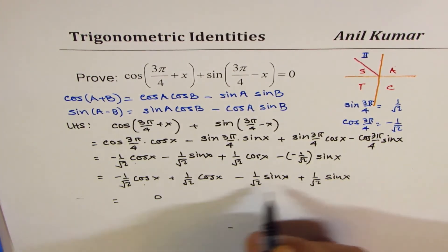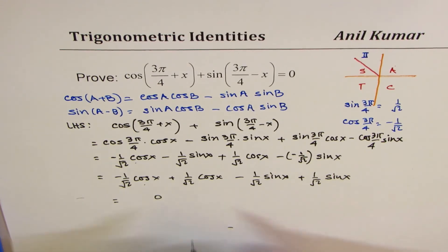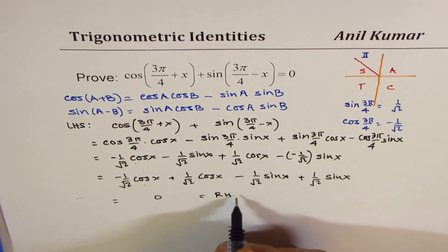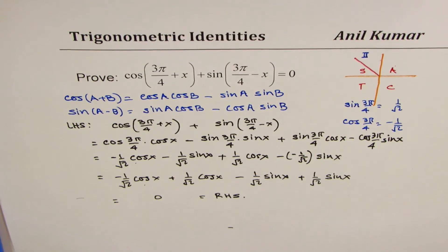And now this and this cancels, so we get 0. And this also is 0, so we get 0 as a result, which is the right-hand side. So that is how you could prove this identity.